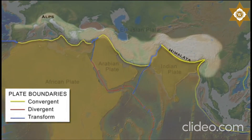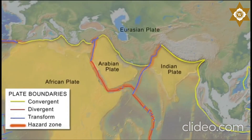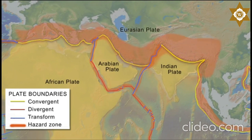Whereas divergent, transform, and subduction zone plate boundaries produce relatively narrow belts of earthquakes, continent-continent collision produces broad earthquake zones.